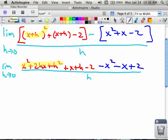So looking ahead, as I write this stuff down, I still have my limit h goes to 0. But now I see that all of the non-h stuff, like x squared and minus x squared, go away. That my positive x and my negative x go away. And my negative 2 and my positive 2 also go away.